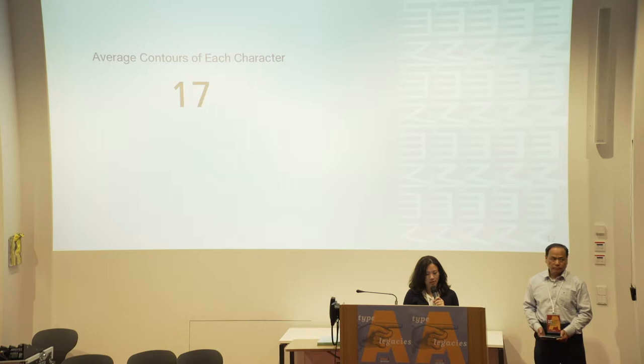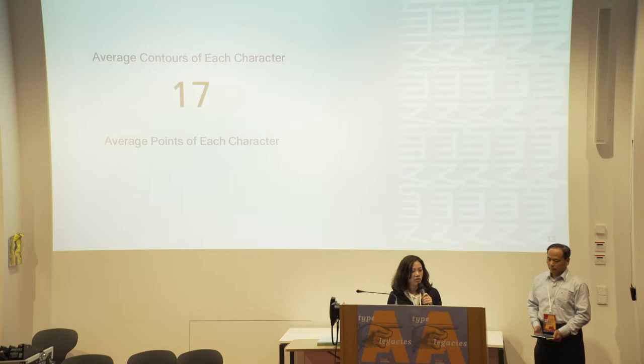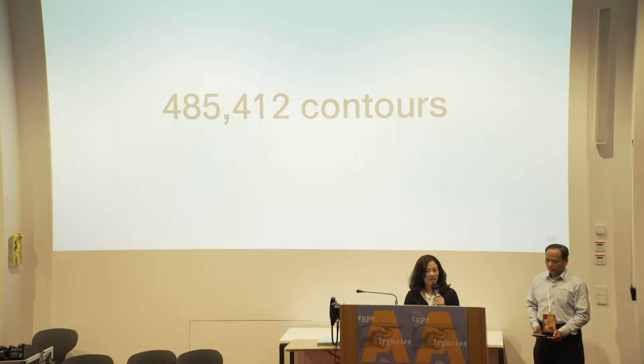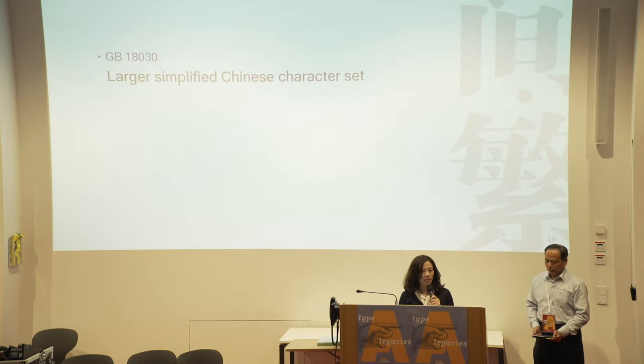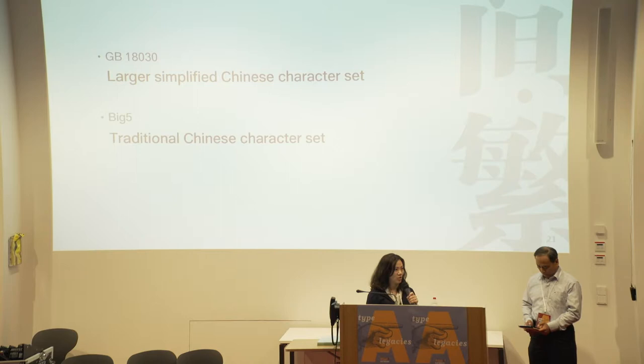The average contours of each character of Jinxihei is 17, and the average points per character is 85. That means we have to deal with over 28,000 glyphs, over 485,000 contours, and over 2 million points. And what I'm talking about is only GB18030, the largest simplified Chinese character set. But if we want to support Big5, the traditional Chinese character set, at the same time, that's another story. I'll have my colleague Jeff share the experience we faced when making those Chinese variable fonts.